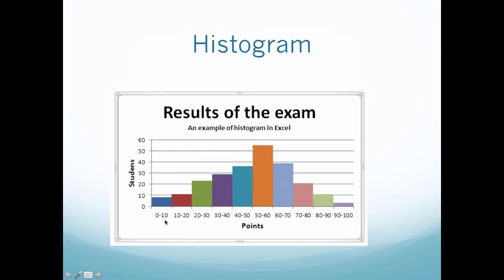We can look at these specific 10-point increments: 0-10, 10-20, 20-30, and so on. Just by looking at this, we can say the most amount of students in my class scored between 50-60 points on the test. These graphical displays are also easier to draw by hand, and you will have some homework assignments asking you to create a histogram.